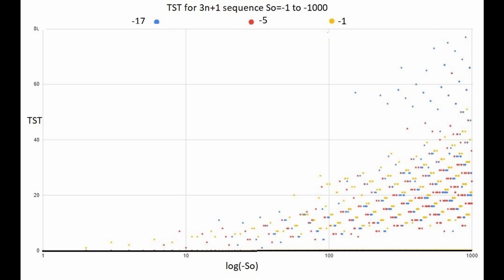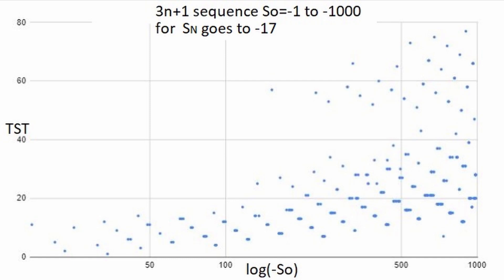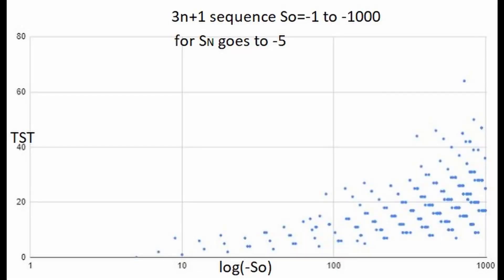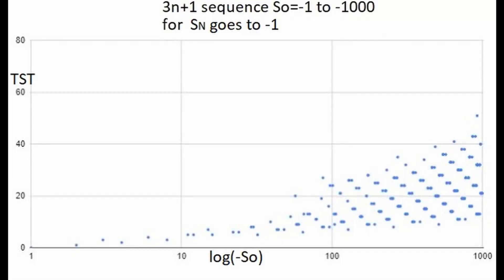With color coding you start to see better organization, so it's best to view the graphs separately. The graph when the sequence goes to minus 17 is reasonably well organized; similarly for minus 5 and minus 1. Each downward-sloping line has the same residual mod 3 value, and each upward-sloping line has the same residual mod 2 value.